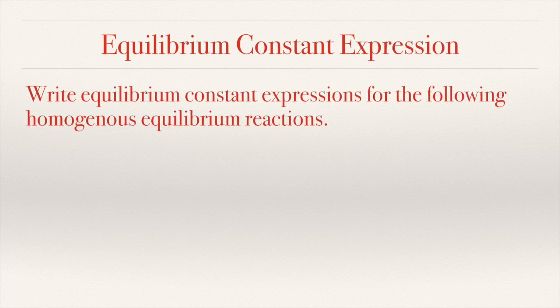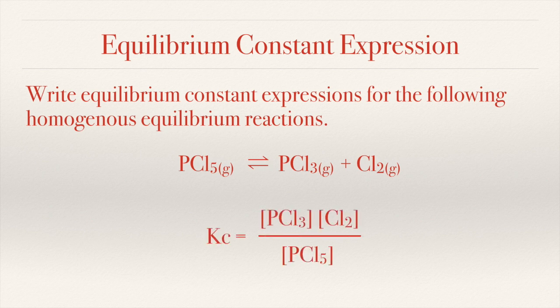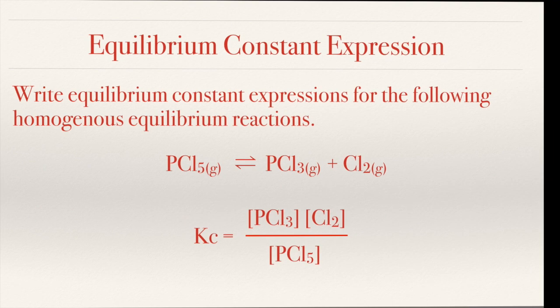More equilibrium constant expressions. Here in this reaction, we have PCl₅ undergoing decomposition to give PCl₃ and Cl₂. The equilibrium constant expression would be [PCl₃] raised to 1 times [Cl₂] raised to 1, divided by the reactant [PCl₅].